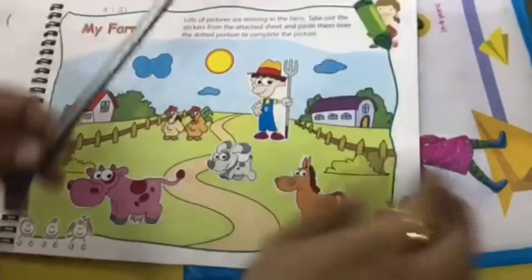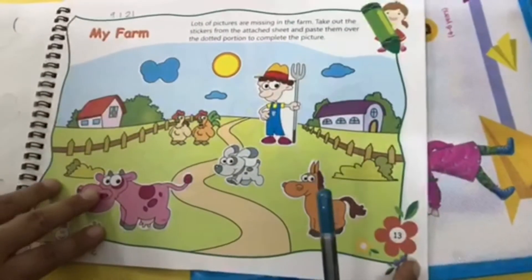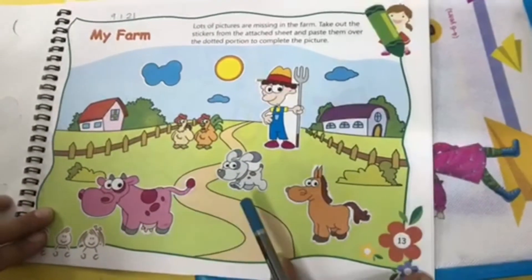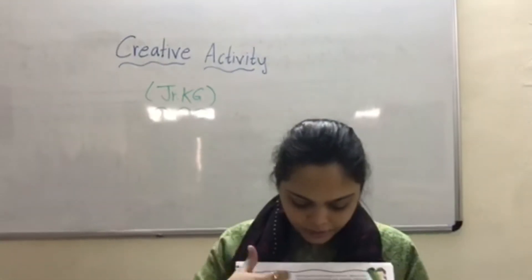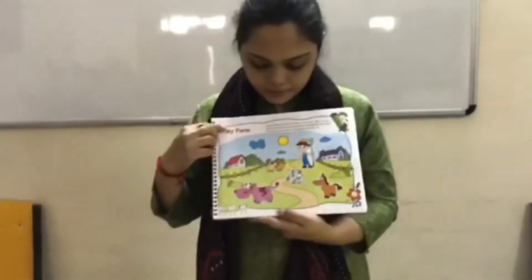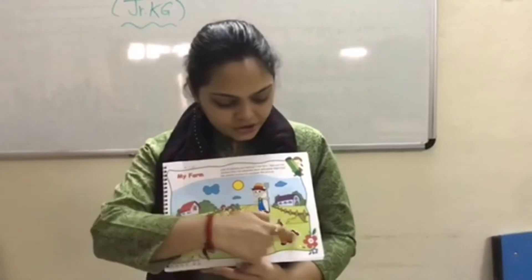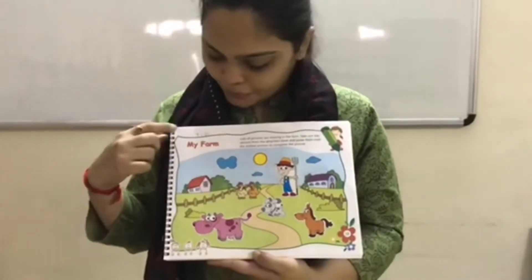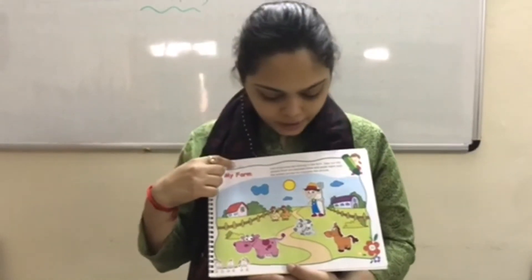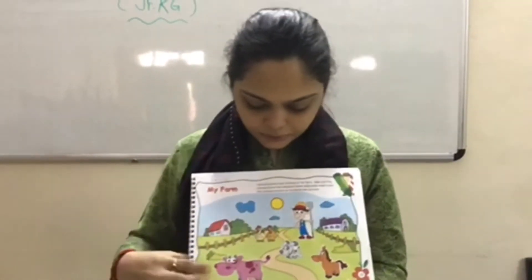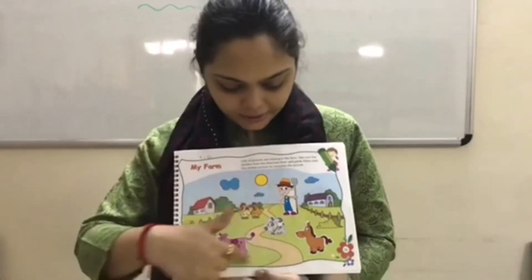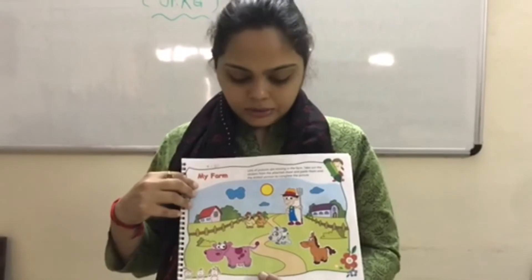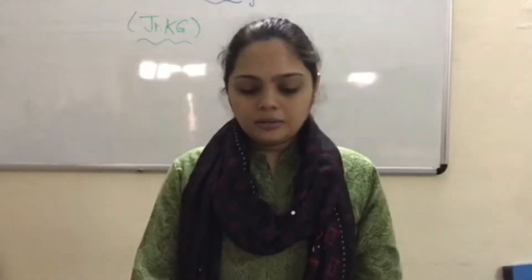Here we have completed our picture and so our activity is also completed. Look here kids — today we have done this activity on page number 13, 'My Farm,' on 9th January. We have completed our activity and our picture is looking like this. So that's all for today. Thank you.